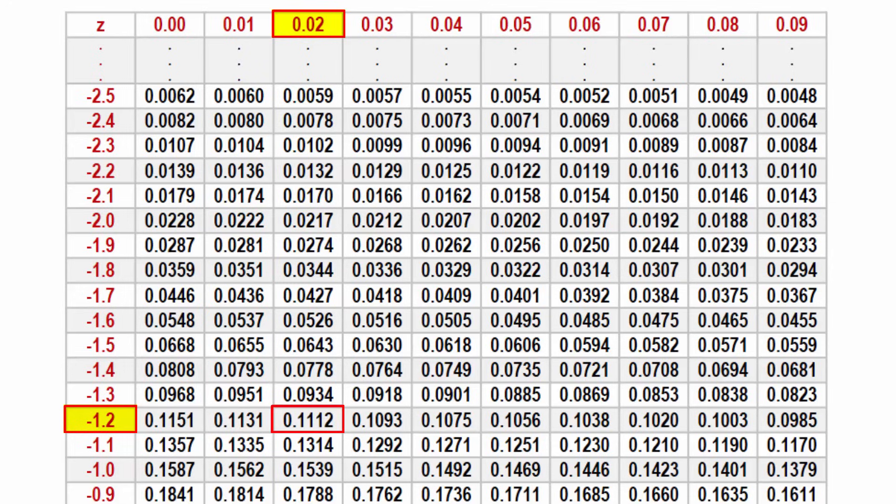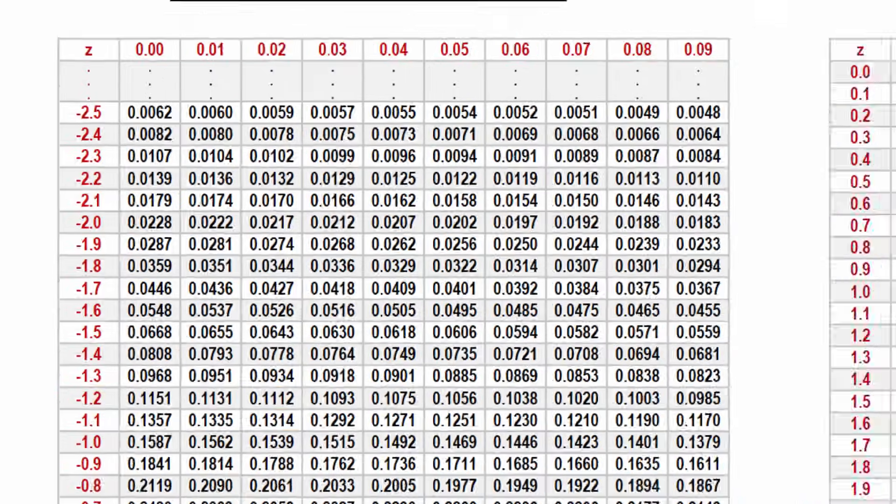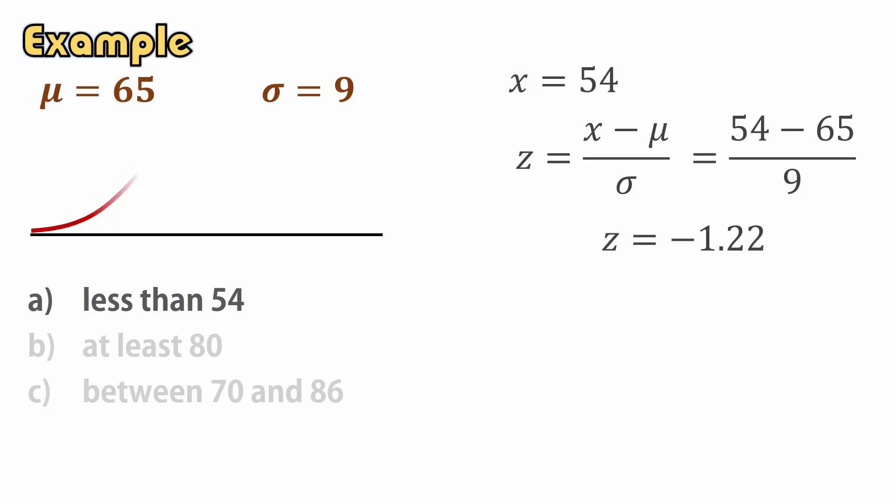That is, the area to the left of z equals negative 1.22 is 0.1112. So on this normal curve, for z equals negative 1.22, the area on the left here is 0.1112, as seen on the table.